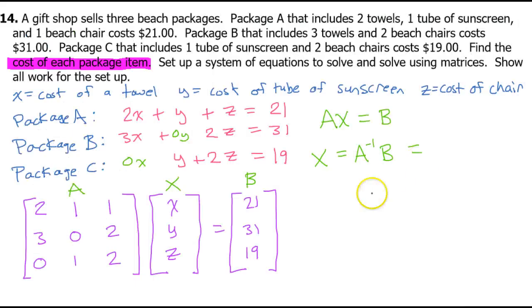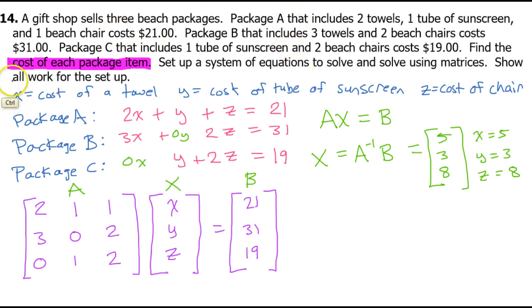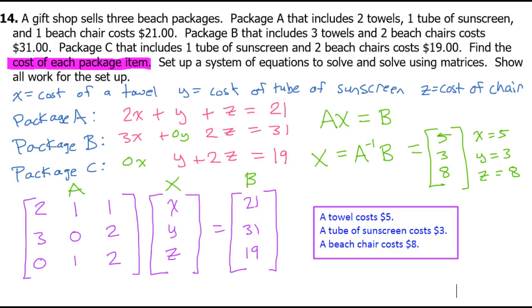The calculator gives 5, 3, 8. So matrix X equals [5;3;8], meaning X equals 5, Y equals 3, and Z equals 8. For a word problem, you can't just state the variable values — you must go back to words for full credit. Final answer: a towel costs $5, a tube of sunscreen costs $3, and a beach chair costs $8.